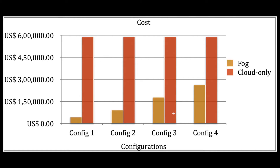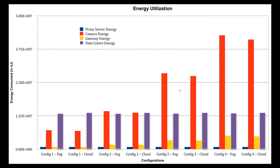Now let's see the cost of execution on cloud-based versus fog-based placement for four configurations — that is, for areas one, two, three, four, and six. It can be seen that fog-based placement is much cheaper than cloud-based placement. This is because of the higher cost of cloud MIPS usage and the cost of running instances for computation in the cloud. For each configuration, the cost is almost double for the cloud compared to fog-based placement, which is clearly visible here.